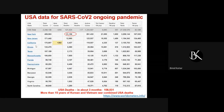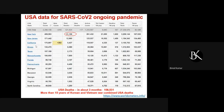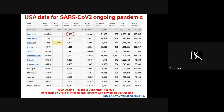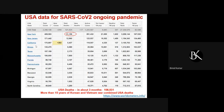Looking at USA data alone, New York state has the highest number of cases and total deaths, followed by New Jersey, California, and other states. The number of deaths in just three months was around 108,000 — more than the deaths from the Korean and Vietnam wars combined for US personnel. Those three months saw more deaths than all those wars combined.